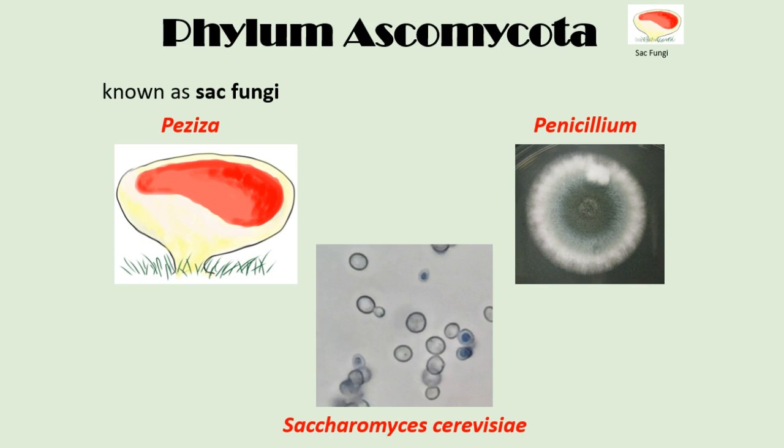Three examples are the Peziza, the Penicillium, and Saccharomyces cerevisiae. Peziza has a large multicellular fruiting body. It's saprophytic, and it grows on the ground and on rotting wood. Penicillium is often found growing on the rind of a citrus fruit. It's also multicellular, but it has more mold-like features. Its importance is in its ability to produce the antibiotic known as penicillin.